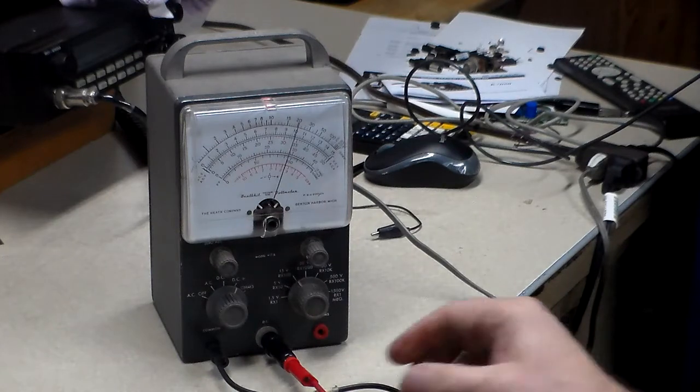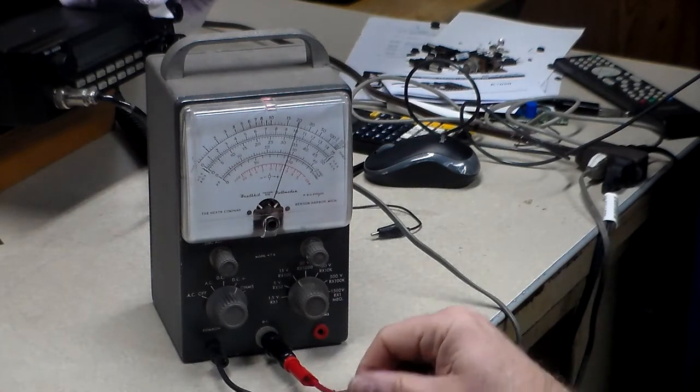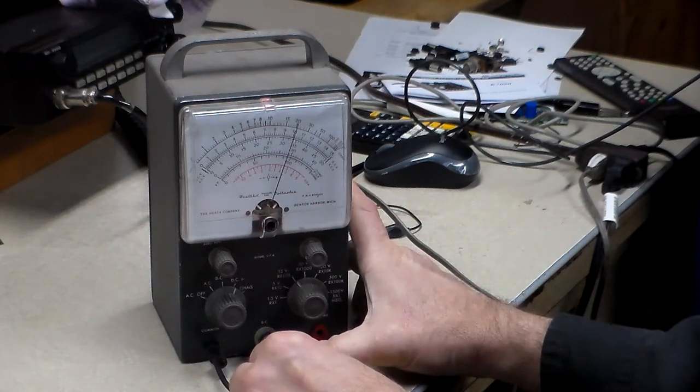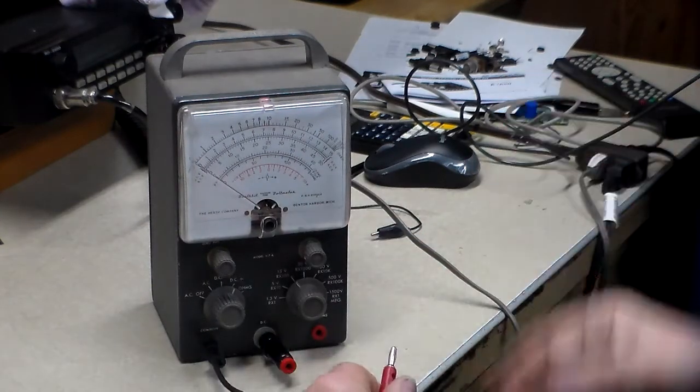So now I can use that and use the same leads that I was going to use right here with the BNC or with the banana on them. So if I need it, I can take it off that,